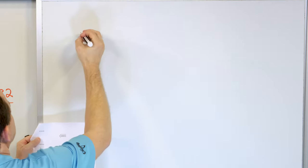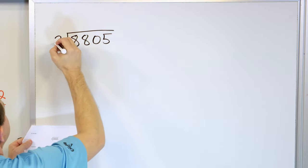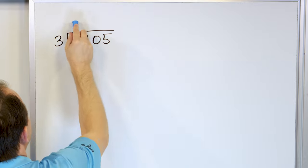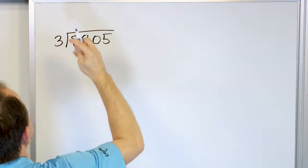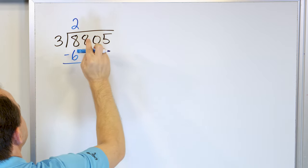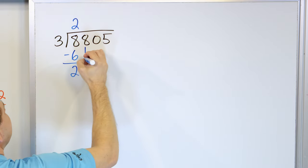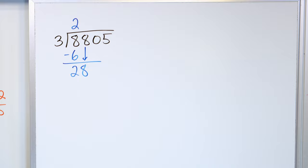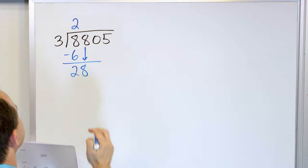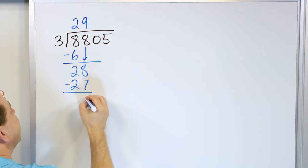Problem number three: 8,805 divided by 3. First digit — 3 times 2 is 6, 3 times 3 is 9, that's too big. So 3 times 2 is 6, multiply, and subtract. 8 minus 6 is 2. Grab the next digit — now we have 28. 3 times 9 is 27, and 3 times 10 is 30, too big. So 3 times 9, multiply, get 27, subtract. 28 minus 27 is 1.